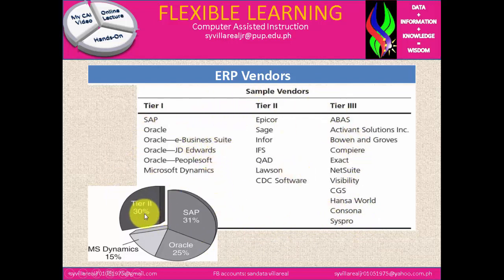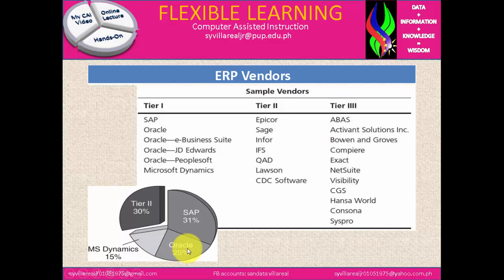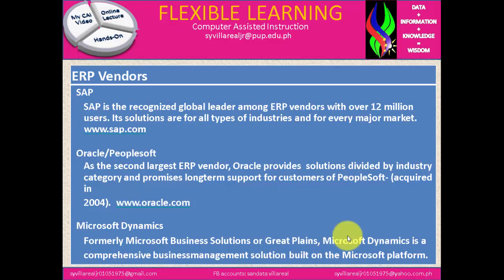According to the figure, the market share breakdown is: Tier 2 at 30%, SAP at 31%, Oracle at 25%, and MS Dynamics at 15%. This shows that the most important systems to study are SAP, Oracle, and MS Dynamics. SAP is the recognized global leader among ERP vendors, with over 12 million users. Its solutions are available for all types of industries and every major market. You can visit www.sap.com for more information.